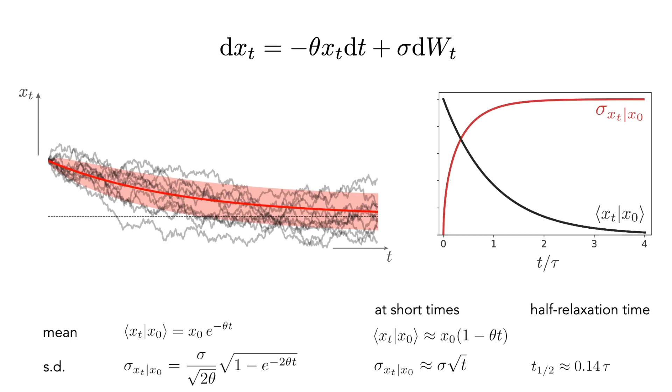In contrast, the mean decreases by half in magnitude after roughly two-thirds of the timescale tau, which is roughly five times longer than the half relaxation time of the standard deviation.